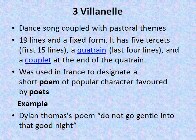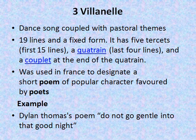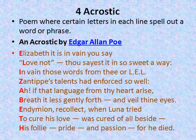The next form is Villanelle. Villanelle is a dance song coupled with pastoral themes in literature. It is defined as a poetic device requiring a poem to have 19 lines and a fixed form. It has five tercets in the first 15 lines, a quatrain in the last four lines, and a couplet at the end of the quatrain. The term was used in France to designate a short poem of popular character. Dylan Thomas's poem 'Do Not Go Gentle into That Good Night' is a Villanelle example.